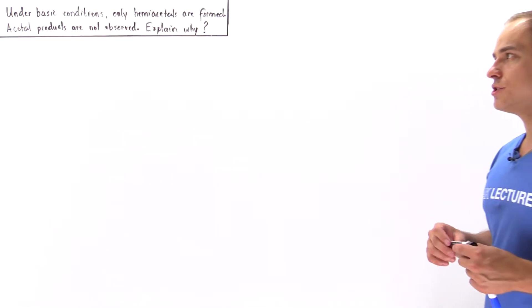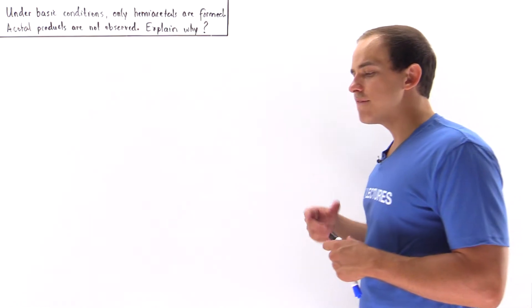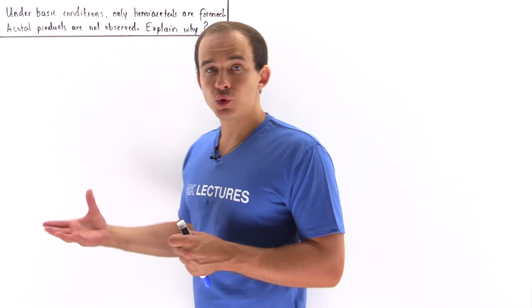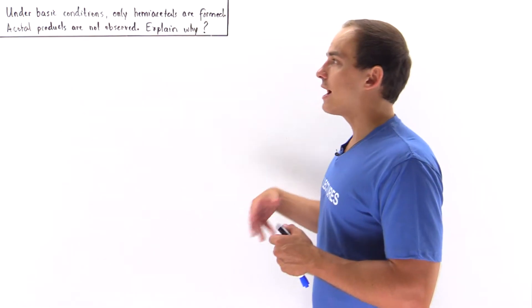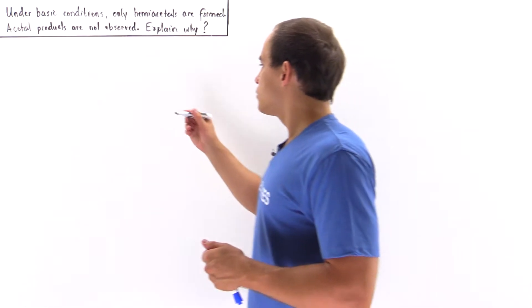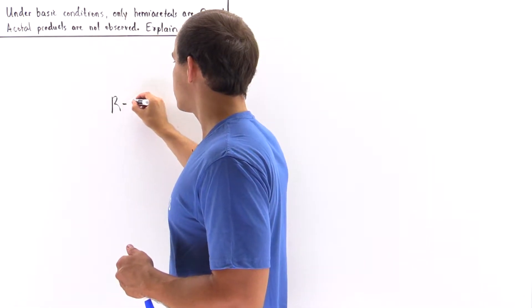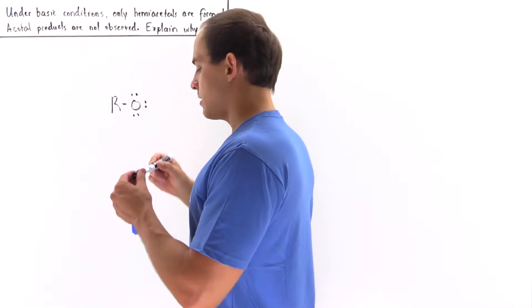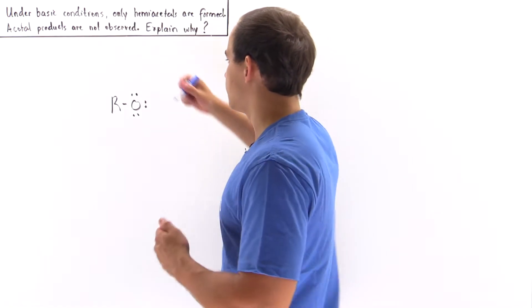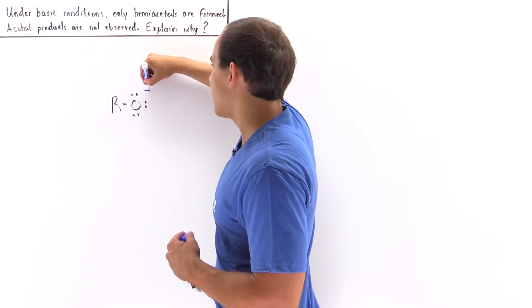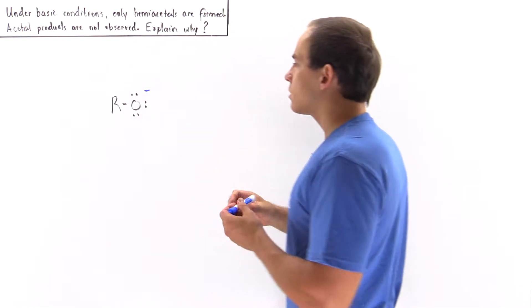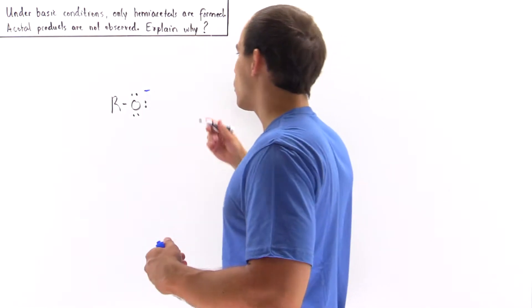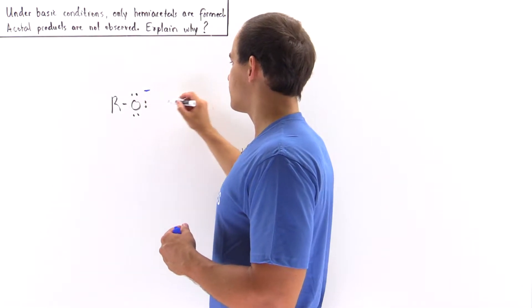So under basic conditions simply means we don't have any acid in our solution. We begin with our alkoxide ion. So let's suppose we have some arbitrary alkoxide. This oxygen basically has a negative charge. So the alkoxide is essentially our conjugate base to our alcohol molecule.